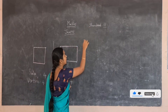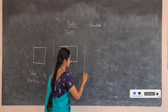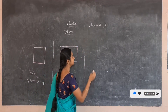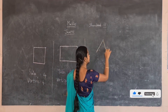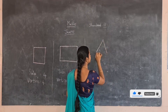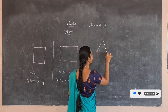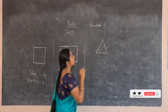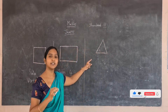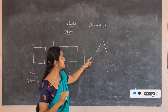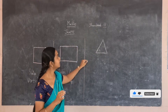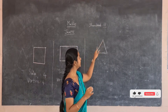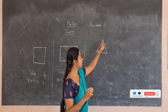Now let's move on to the next shape. What is this shape called as? This is a triangle. A triangle is formed with 3 lines.